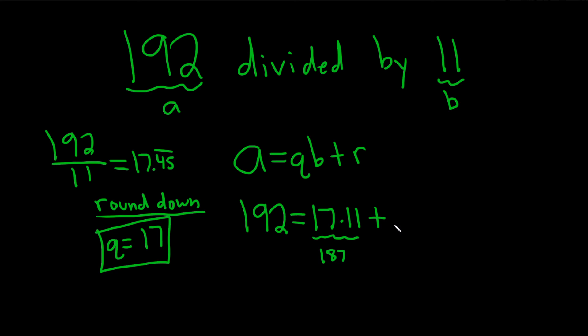192 minus 187 is 5. Or you can just think, what do you have to add to this to get 192? Well, 5. So R is equal to 5. That's going to be our remainder. I hope this video has been helpful to you. Good luck.